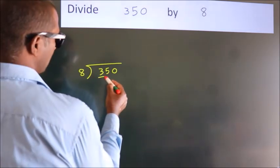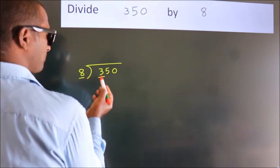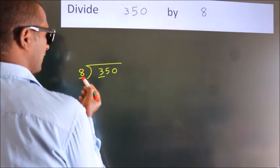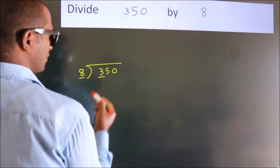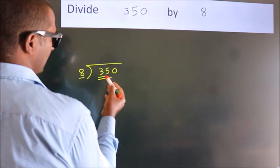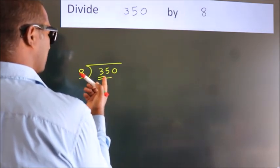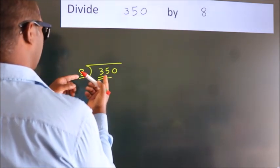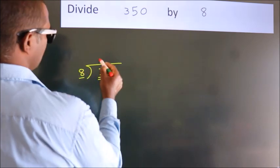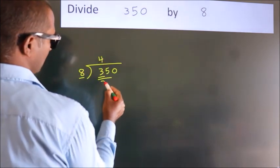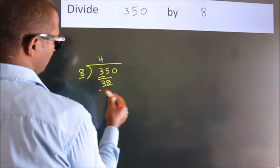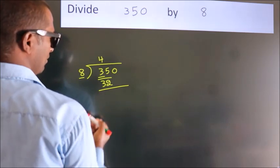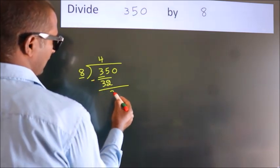Next, here we have 3. Here 8. 3 smaller than 8. So we should take 2 numbers. 35. A number close to 35 in 8 table is 8 fours 32. Now, we should subtract. We get 3.